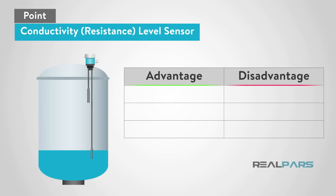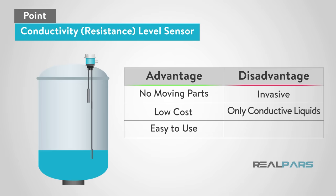The advantages of using a conductivity level sensor are there are no moving parts, they are low cost, and fairly easy to use. The disadvantages are they are invasive, meaning they must touch the product being sensed, they only sense conductive liquids, and the probe will erode over time.